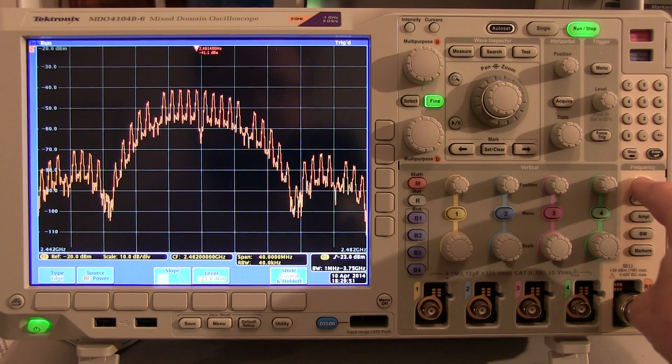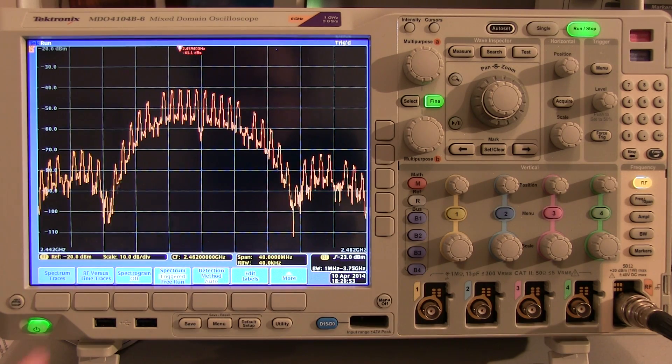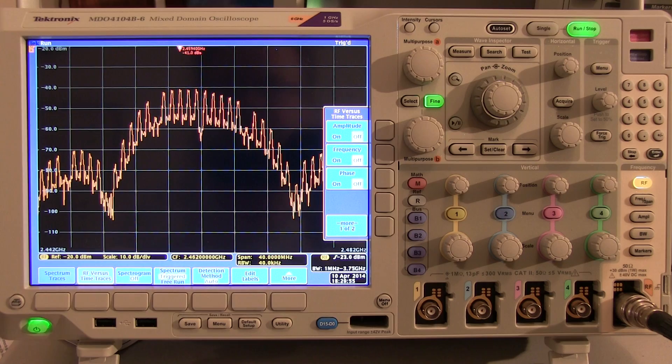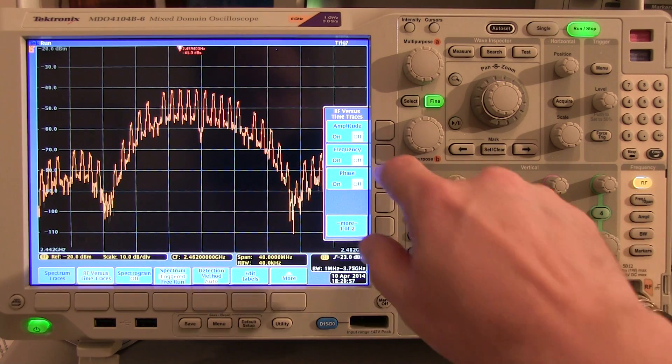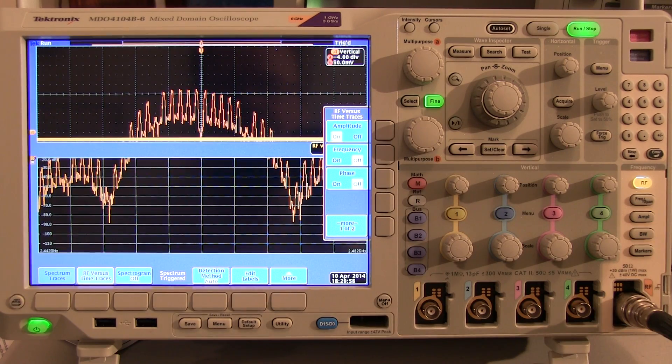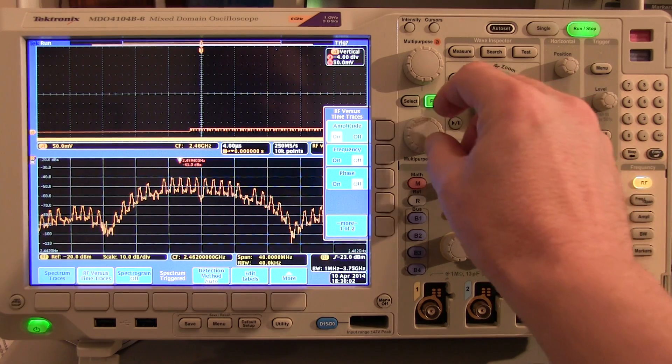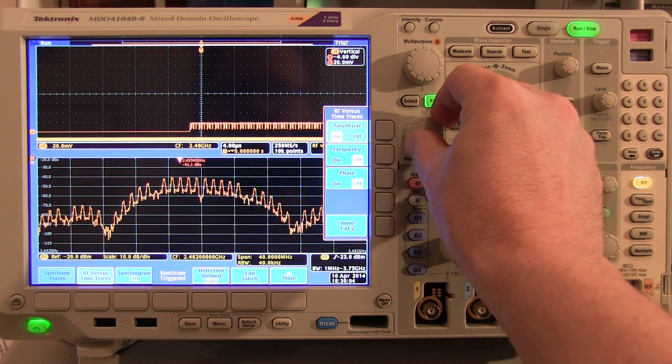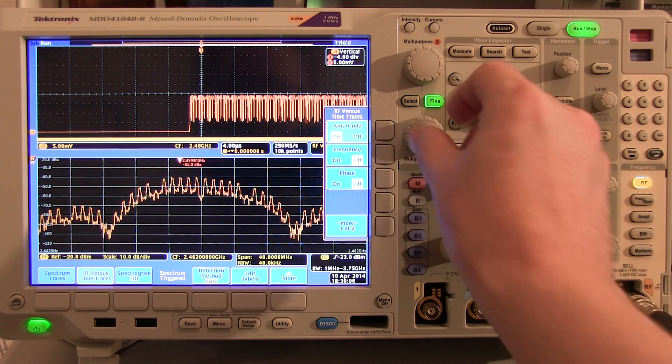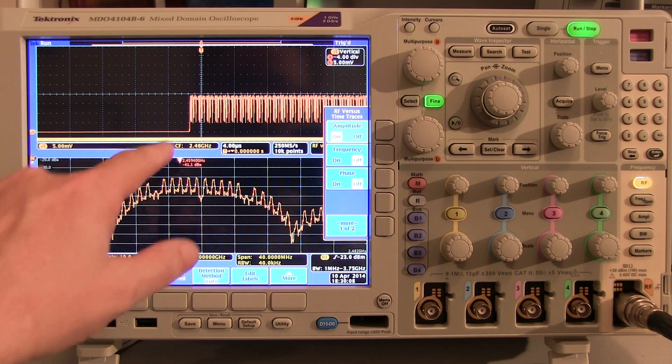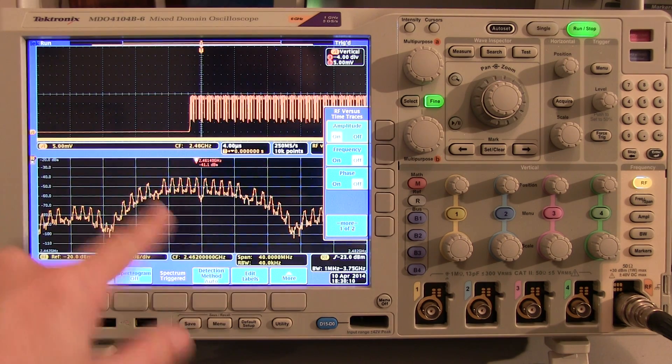If I again bring up the RF menu, I could bring up my RF versus time traces and turn on an amplitude versus time trace. Using the B multipurpose knob, I can change the vertical scale of that. And now I can actually see RF amplitude versus time.